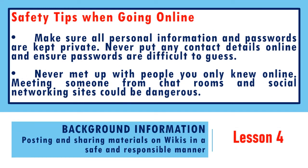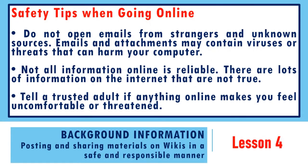For you to become a safe and responsible user of wikis, take note of the following safety tips when going online. First, make sure all personal information and passwords are kept private. Never put any contact details online and ensure passwords are difficult to guess. Never meet up with people you only knew online — meeting someone from chat rooms and social networking sites could be dangerous. Do not open emails from strangers and unknown sources, as emails and attachments may contain viruses or threats that can harm your computer. Not all information online is reliable; there are lots of information on the internet that are not true. Tell a trusted adult if anything online makes you feel uncomfortable or threatened. Those tips will help you become safe and responsible users of wiki sites.